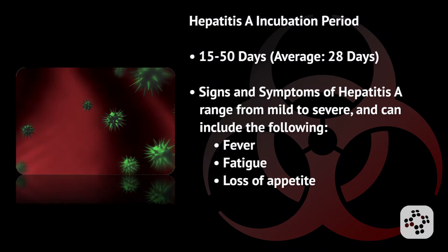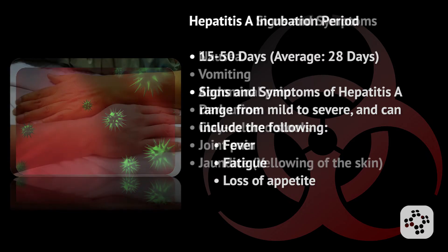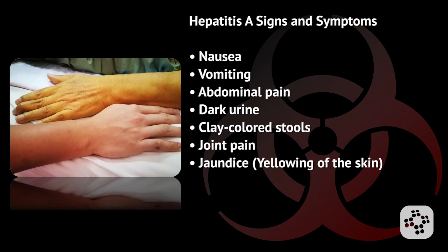The incubation period of Hepatitis A ranges between 15 and 50 days, with an average of 28 days. Signs and symptoms include fever, fatigue, loss of appetite, nausea, vomiting, abdominal pain, dark colored urine, clay colored stools, joint pain and aches, along with jaundice, which is a yellowish pigment of the skin.